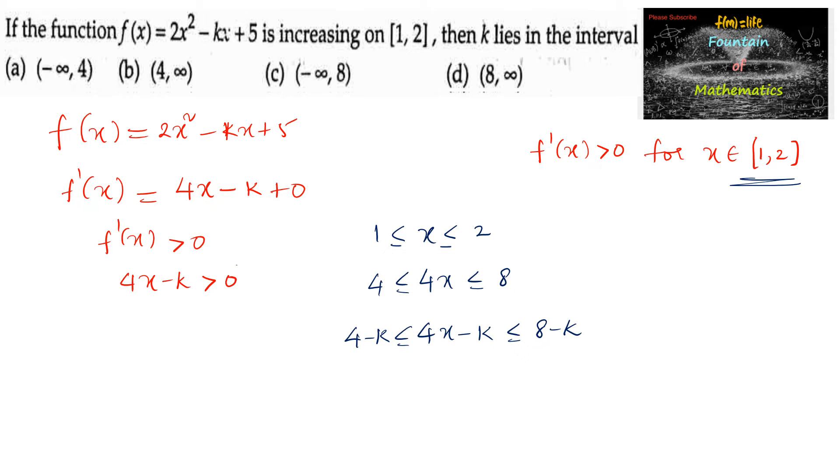To make 4x - k positive, both 4 - k and 8 - k must be positive. So we can write 4 - k.